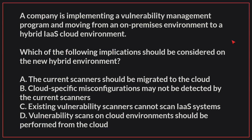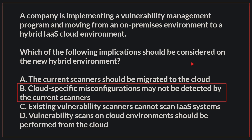A company is implementing a vulnerability management program and moving from an on-premises environment to a hybrid IaaS cloud environment. Which of the following implications should be considered for the new hybrid environment? The correct answer is B: Cloud-specific misconfigurations may not be detected by the current scanners.